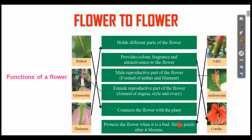Then next is Androecium, which is the male reproductive part of the flower. Then last one is Corolla. Corolla provides color, fragrance, and attractiveness to the flower.